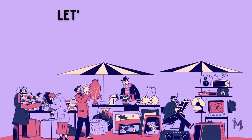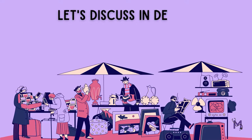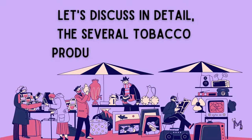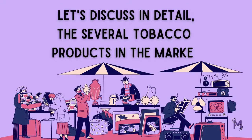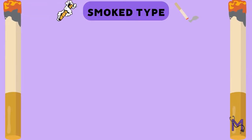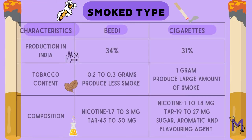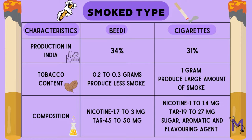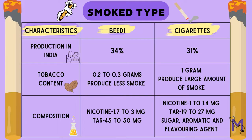There are several types of tobacco products available in the market and we will be discussing them in detail. The first type is the smoked type of tobacco. The most common examples of this include cigarettes and BD. To have a better understanding, let us study the characteristics of each as a comparative study in a tabular form.